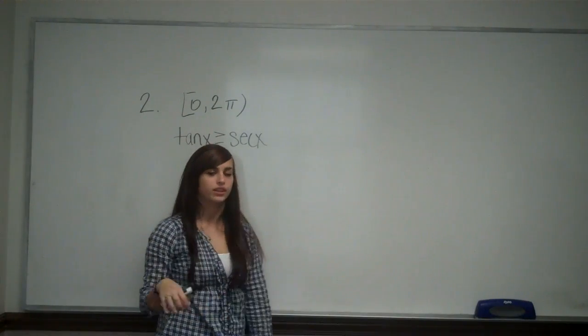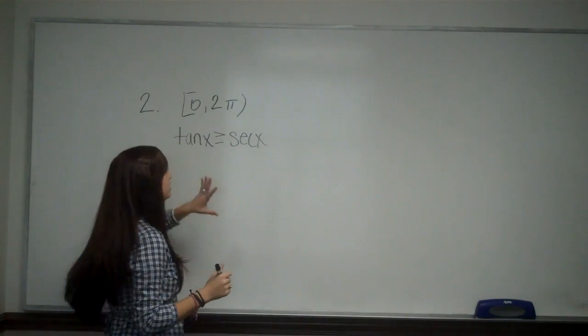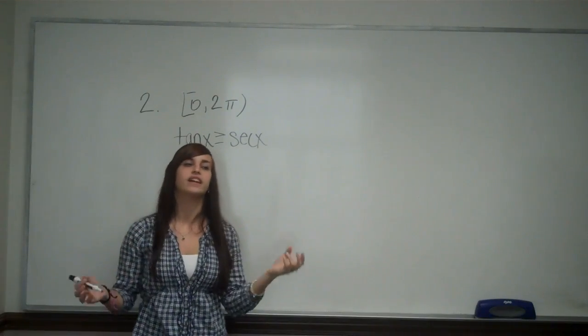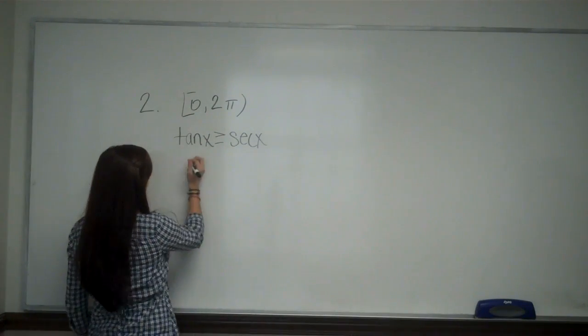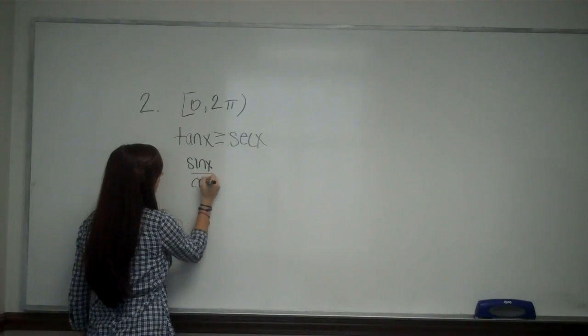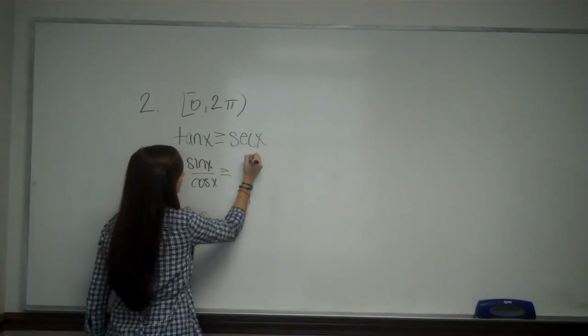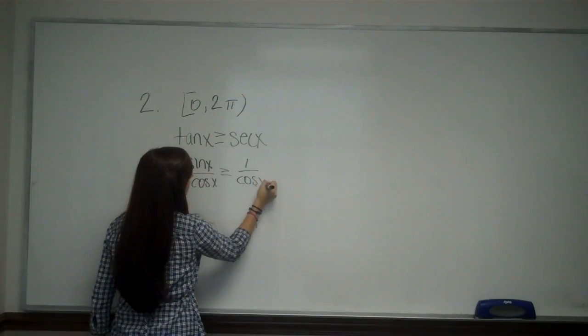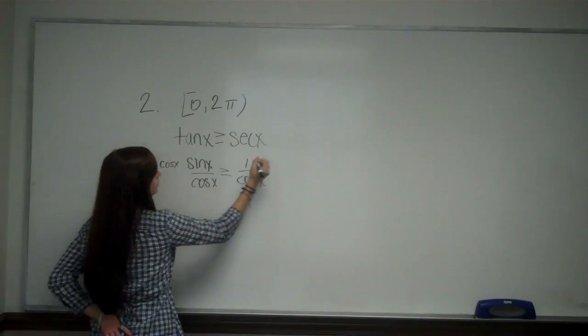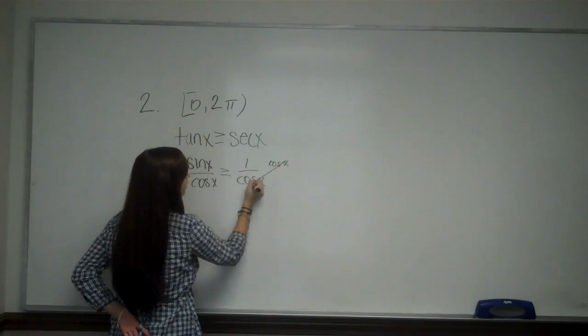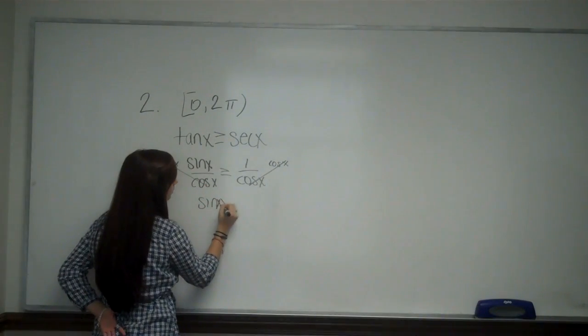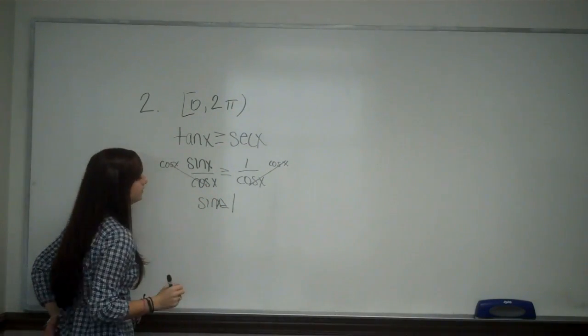There is a common mistake with this problem and the common mistake would just be dividing right away. I'm going to show you the mistake and show you why it is a mistake. The mistake would say this was sine x over cosine x less than or equal to one over cosine x. From here we can multiply each side by cosine to cross these, and all I'm left with is sine x is greater than or equal to one.